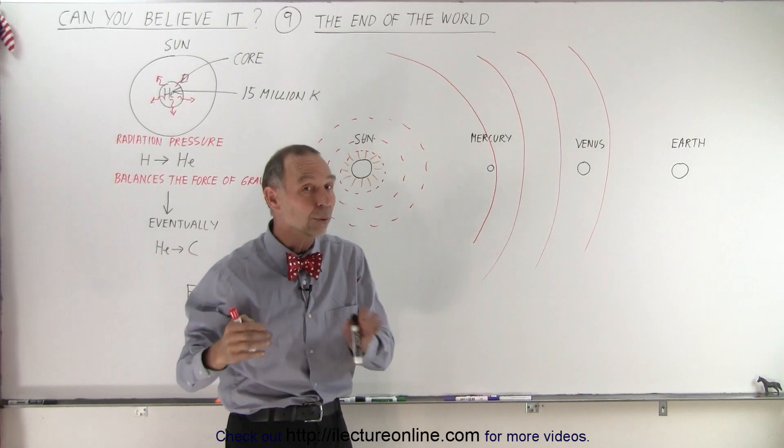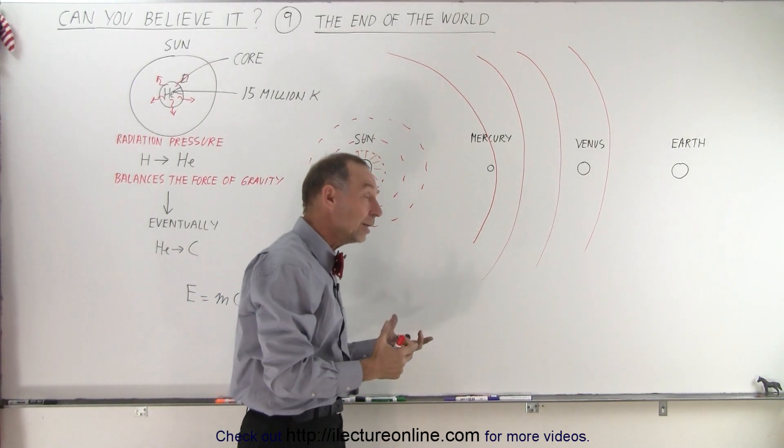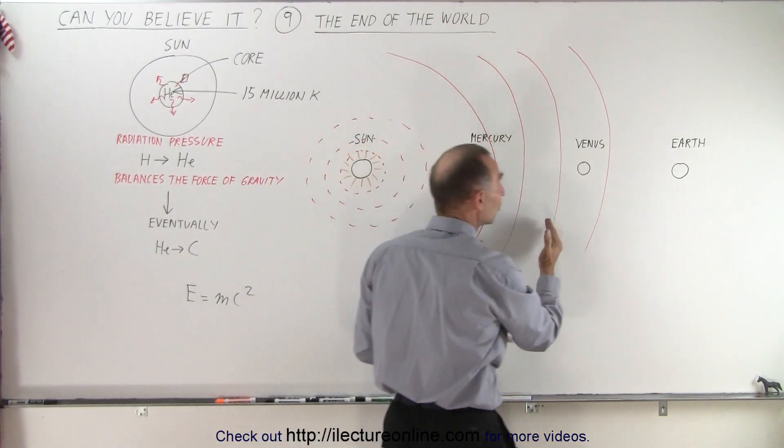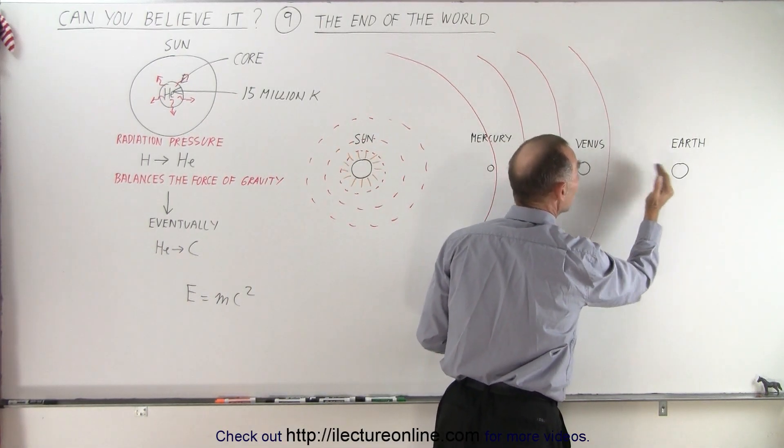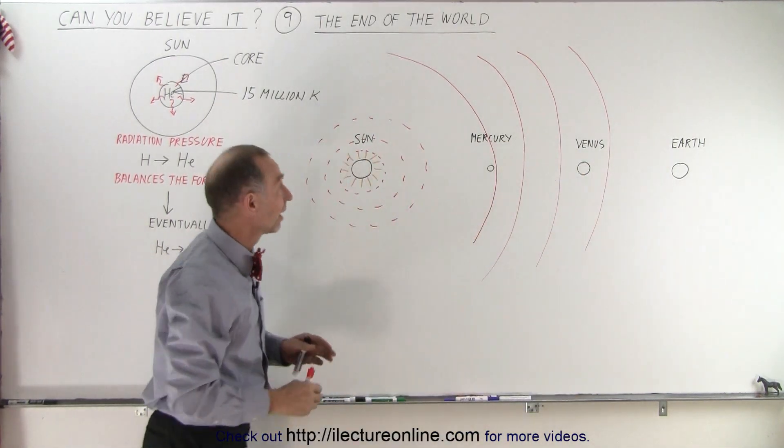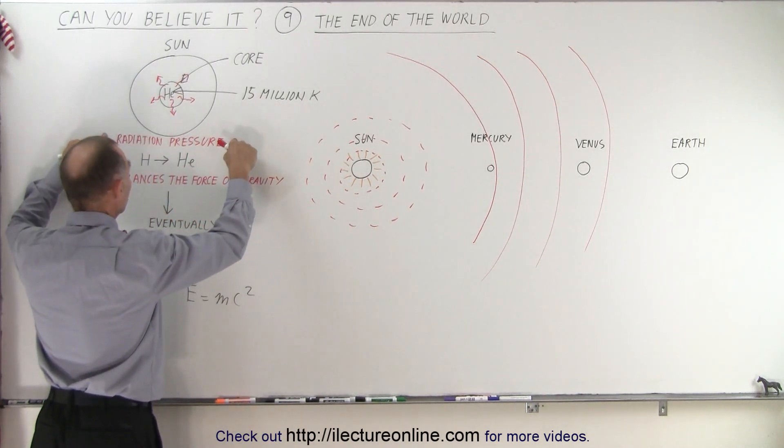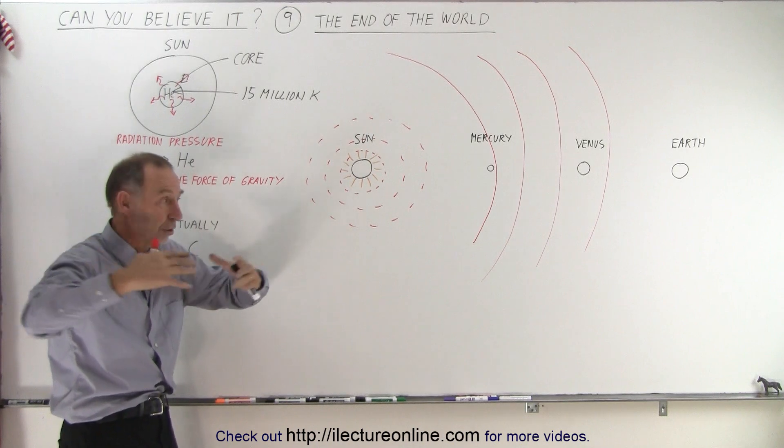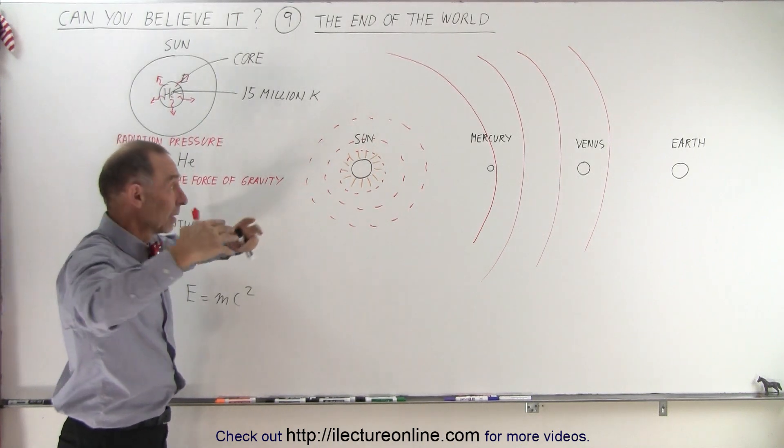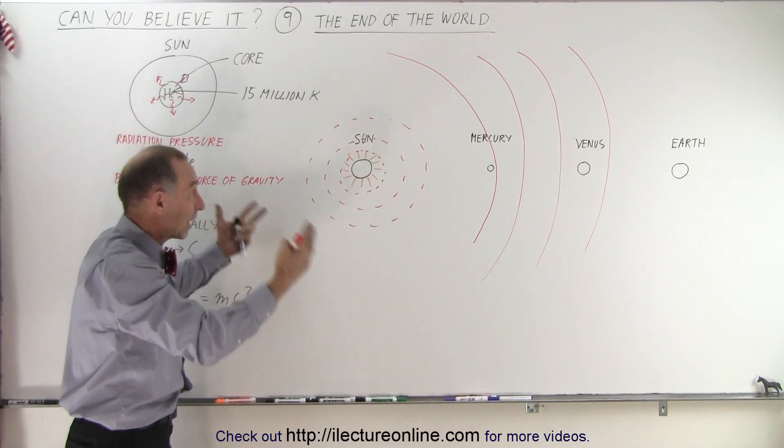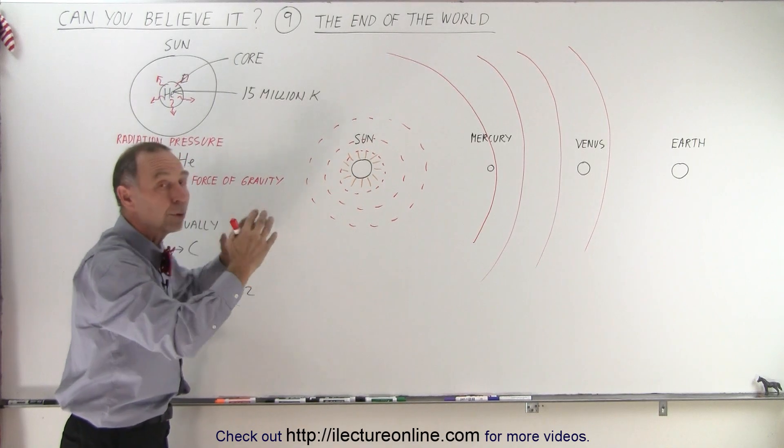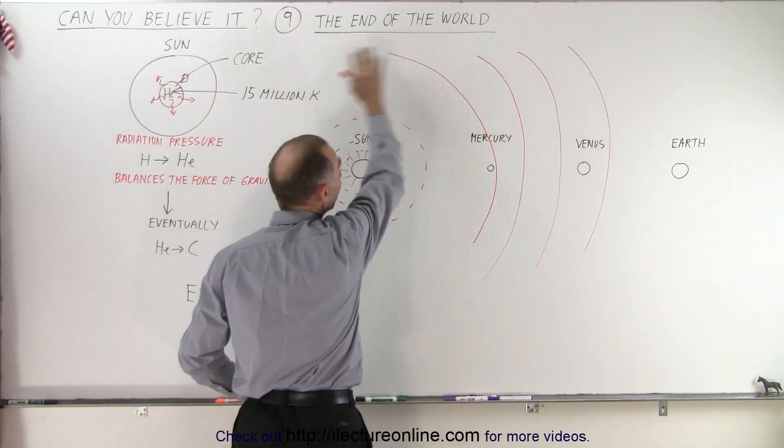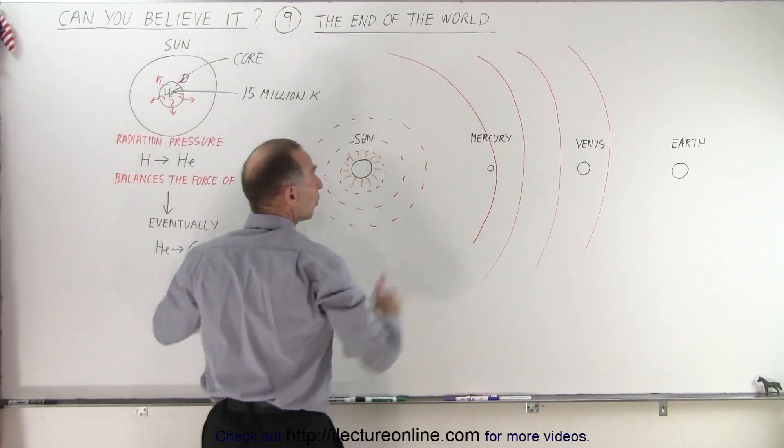But where will the sun stop? Well we do calculations and we believe that the sun will stop expanding before it reaches the earth. Which means that again the radiation pressure is balanced with the forces of gravity. But now because the sun is so big the radiation pressure is much greater than it was before. The balancing will be at a point where the sun is much bigger. And notice the size of the sun now. It has become what we call a red giant.